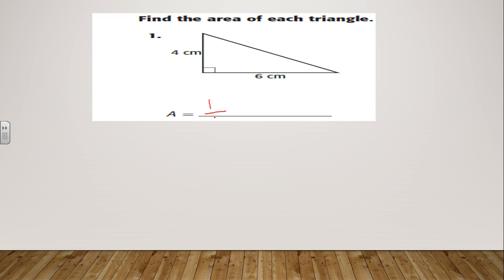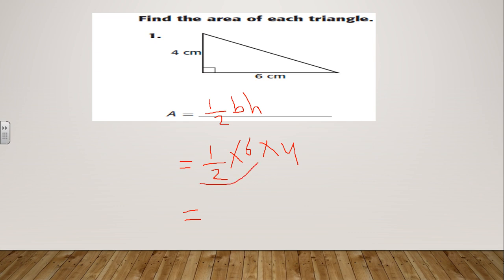First, let's write the rule: half times base times height. So that will be half times six times four. To find the answer easily, do half times six first: half times six equals three, and three times four equals twelve.